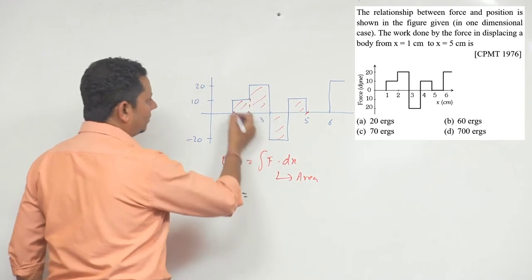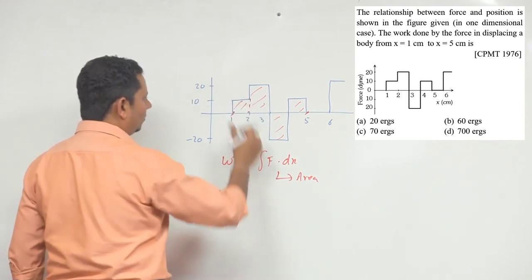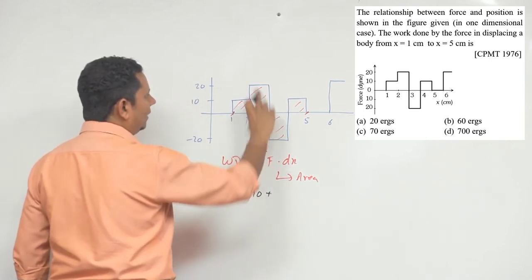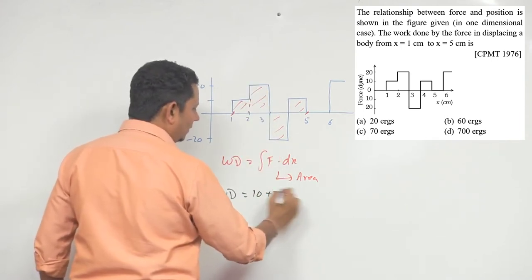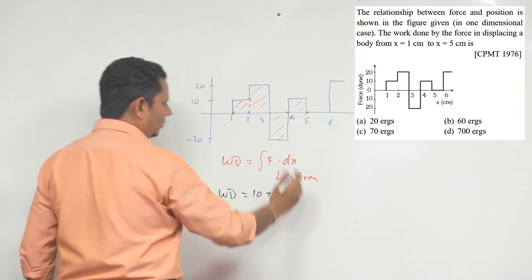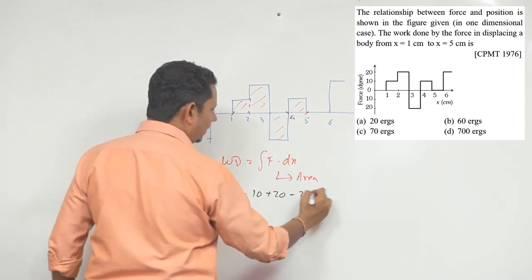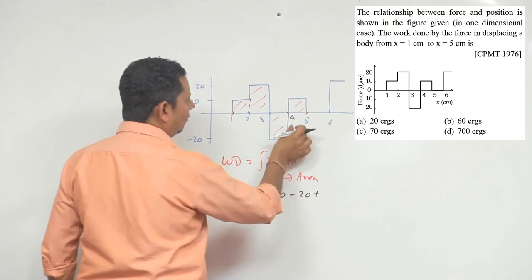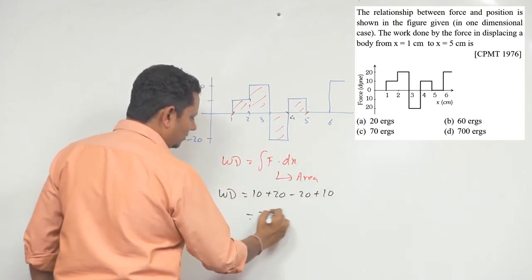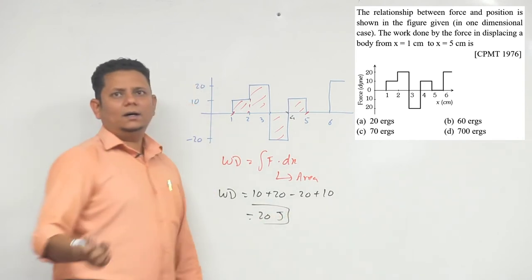So we just need to calculate the area. The work done will be equal to the first rectangle's area which is 1 into 10, so 10, plus this is 1 into 20, that's 20, plus minus this is 1 into 20, so minus 20, plus this is 1 into 10. So the 20s cancel out, so based on this we can say 20 joule.